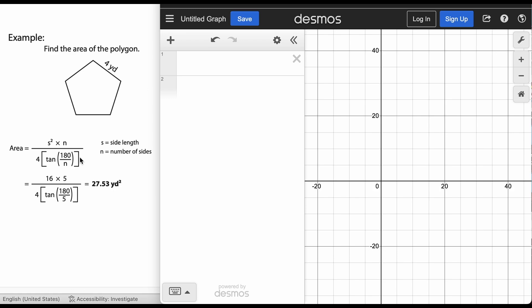Now that denominator there is just four times the tangent of 180 over n, with n being the number of sides again, so that bottom is going to look like four tangent 180 over five.